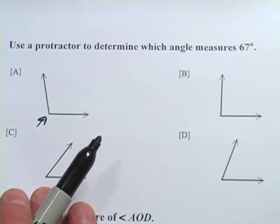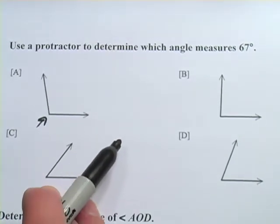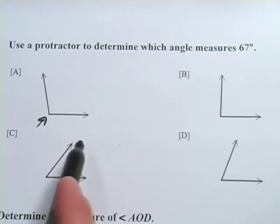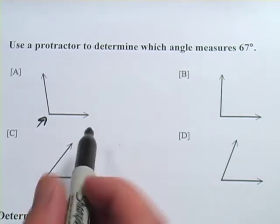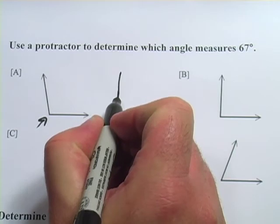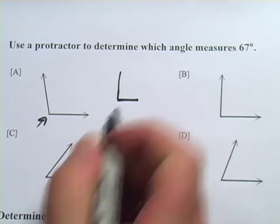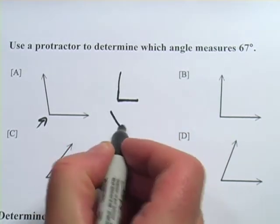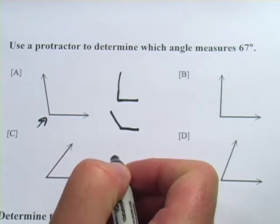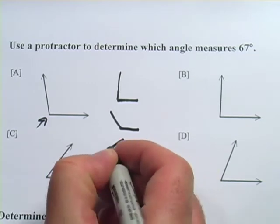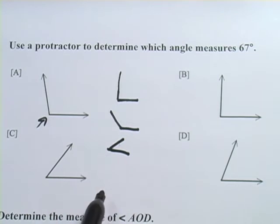Now, actually, before you even take out the protractor, one of the things you should do is use some common sense. You should know what a 90-degree angle looks like, right? A 90-degree angle is just going to be an L. And anything greater than 90 degrees is going to be wider than that. And anything less than 90 degrees is going to be narrower than that.